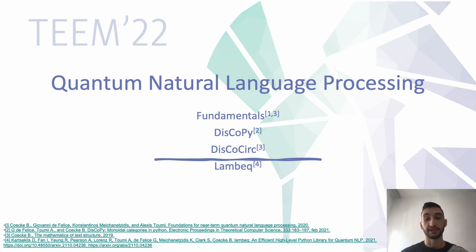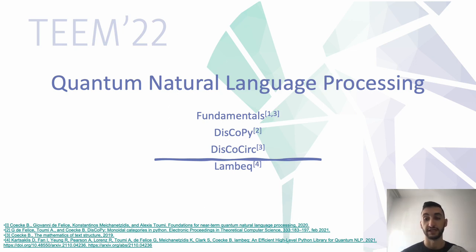DisCoSIRP is a library that establishes interactions between sentences in a text to obtain the meaning of the whole text. And finally, LAMBEQ is a set of tools that facilitates syntactic analysis, rewriting, and simplification of string diagrams, as well as the conversion of them into ansätze or quantum circuits.